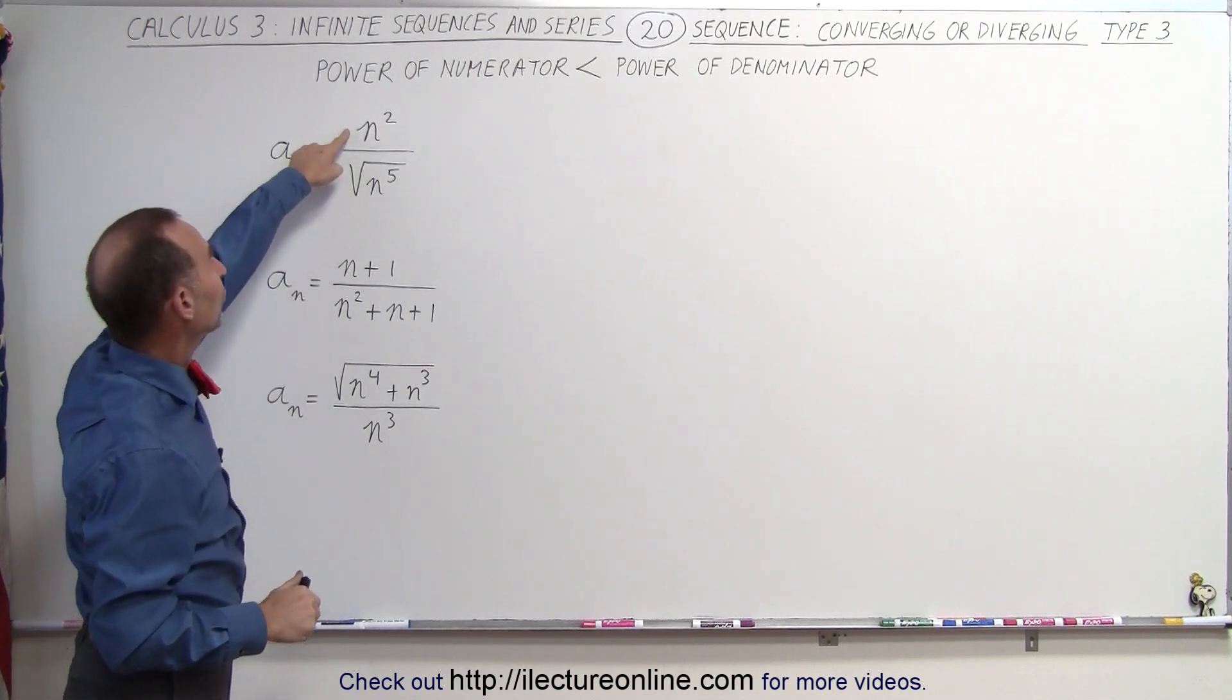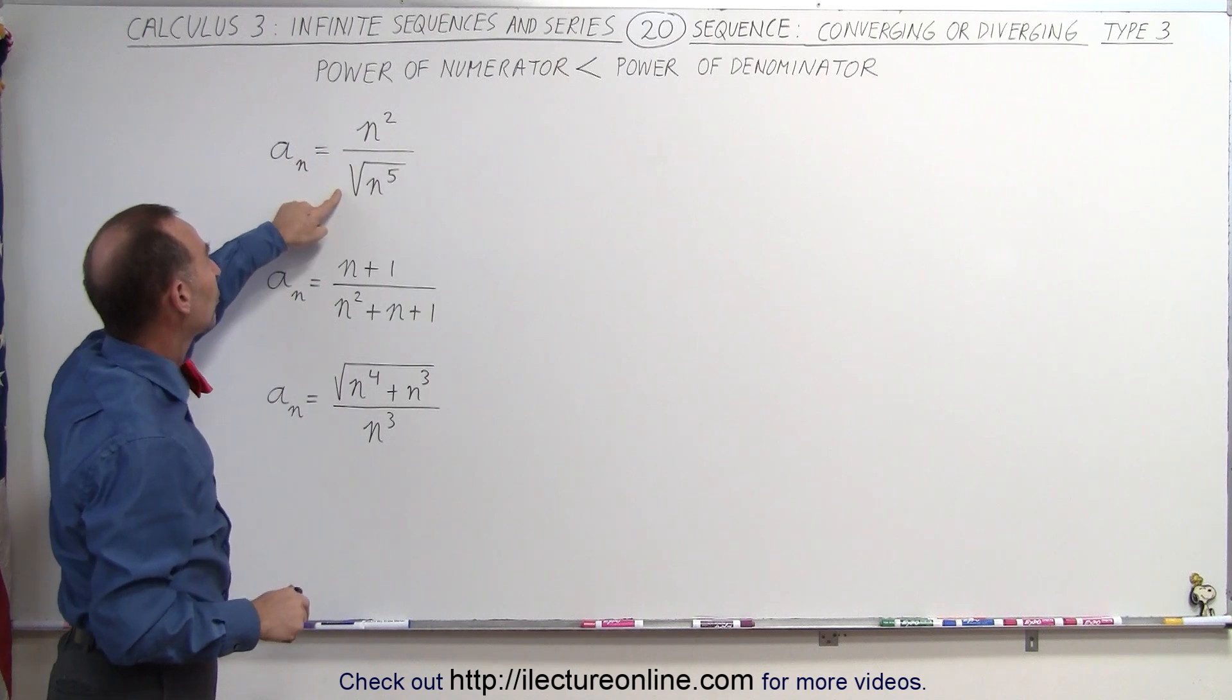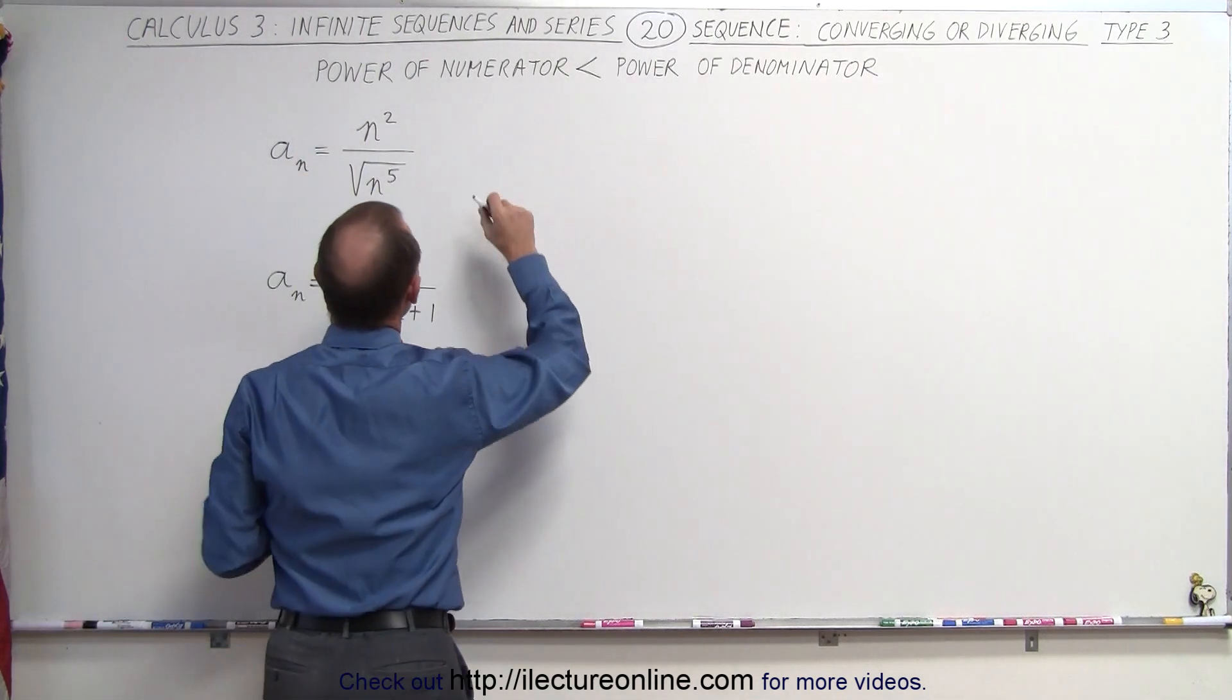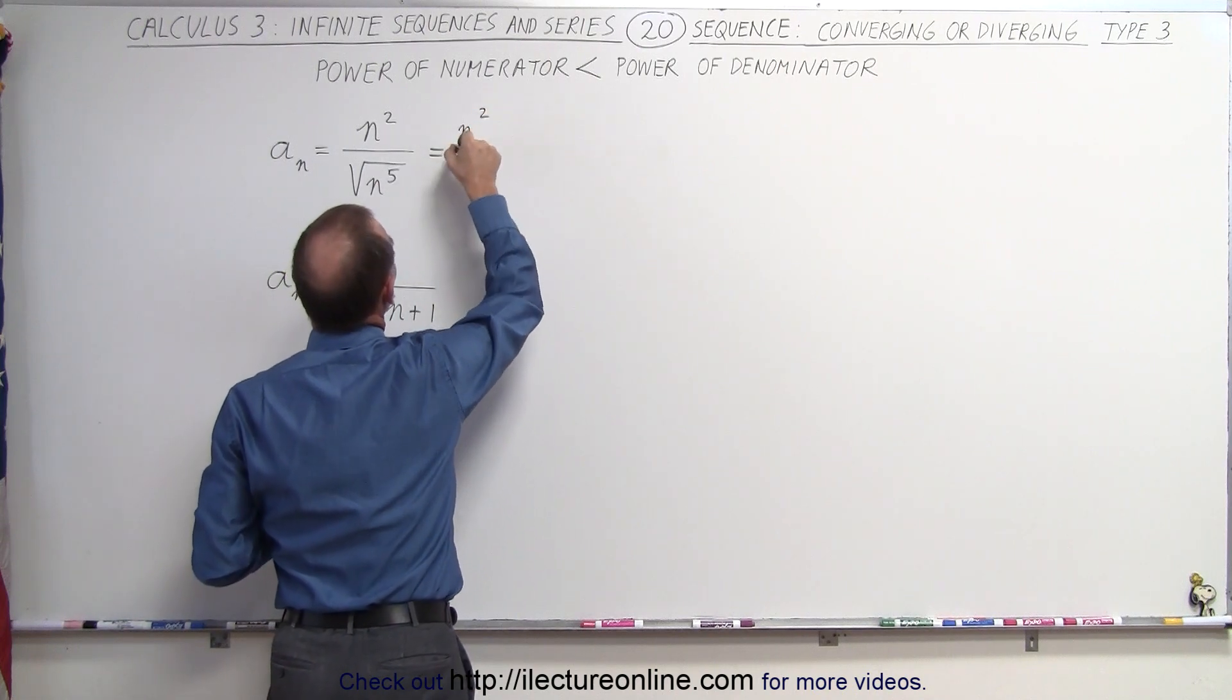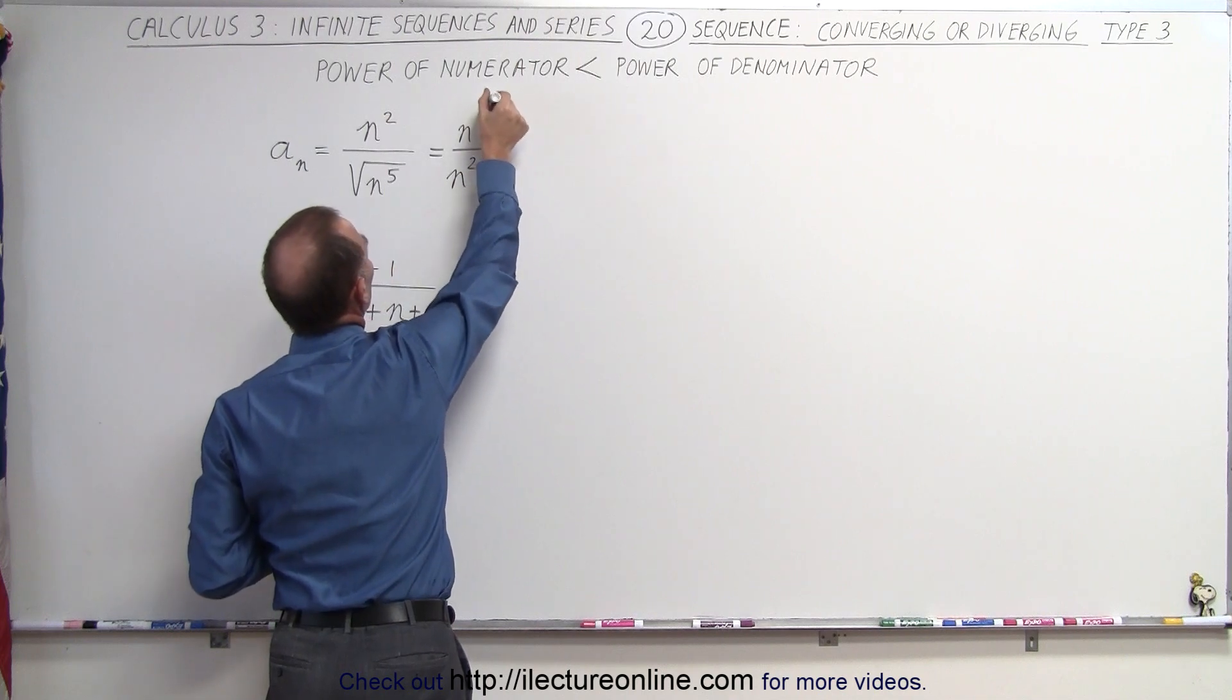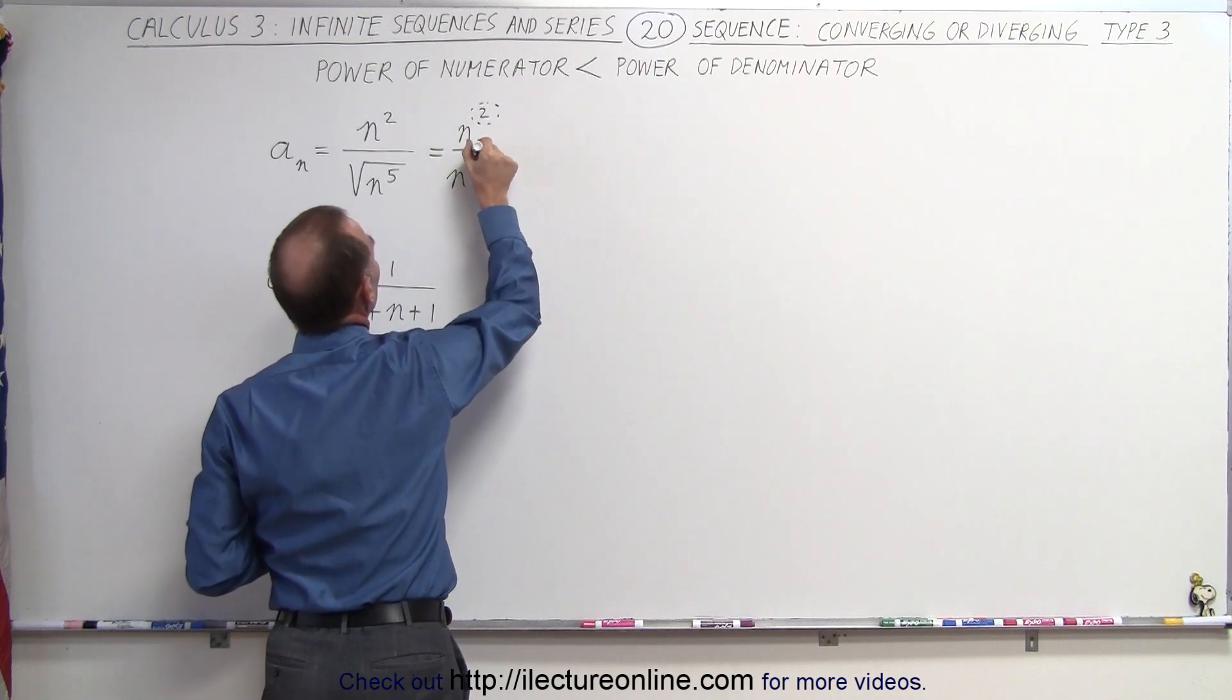For example, here we have n squared divided by the square root of n to the fifth power. So we can simplify this to make it easier to look at, but this is equal to n squared divided by n to the 2.5 power. So you notice that 2 is smaller than 2.5.